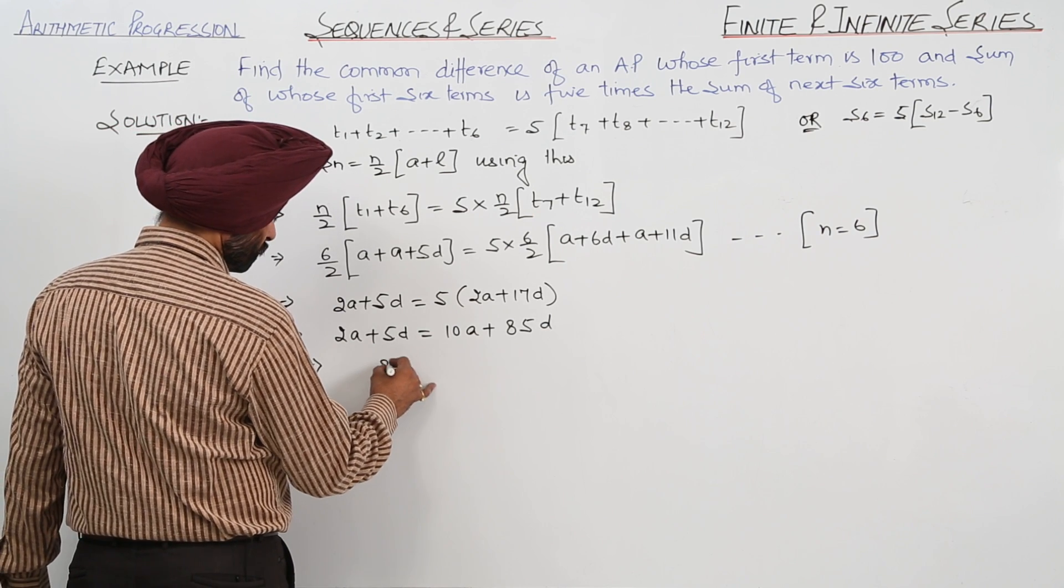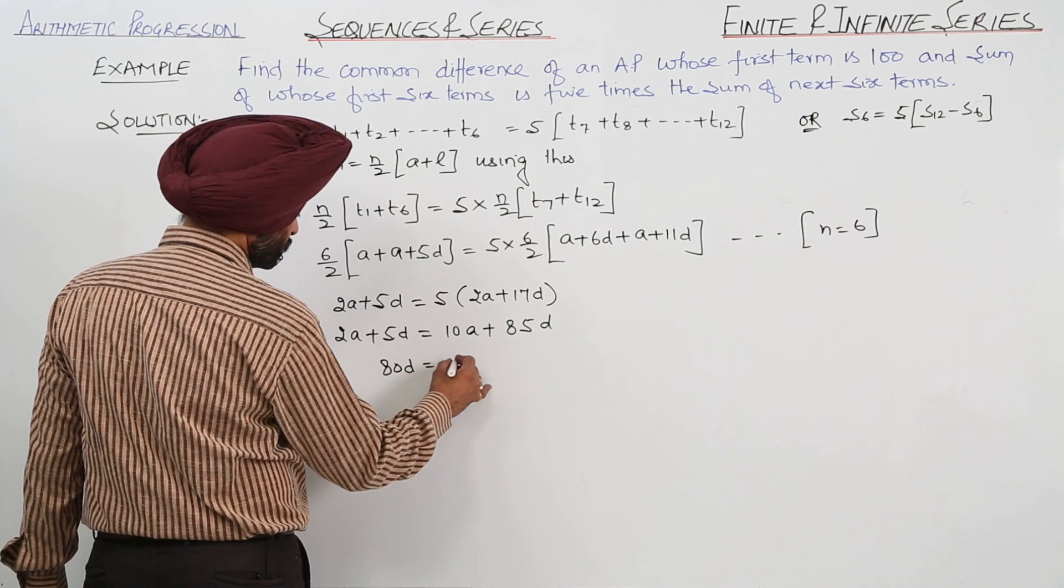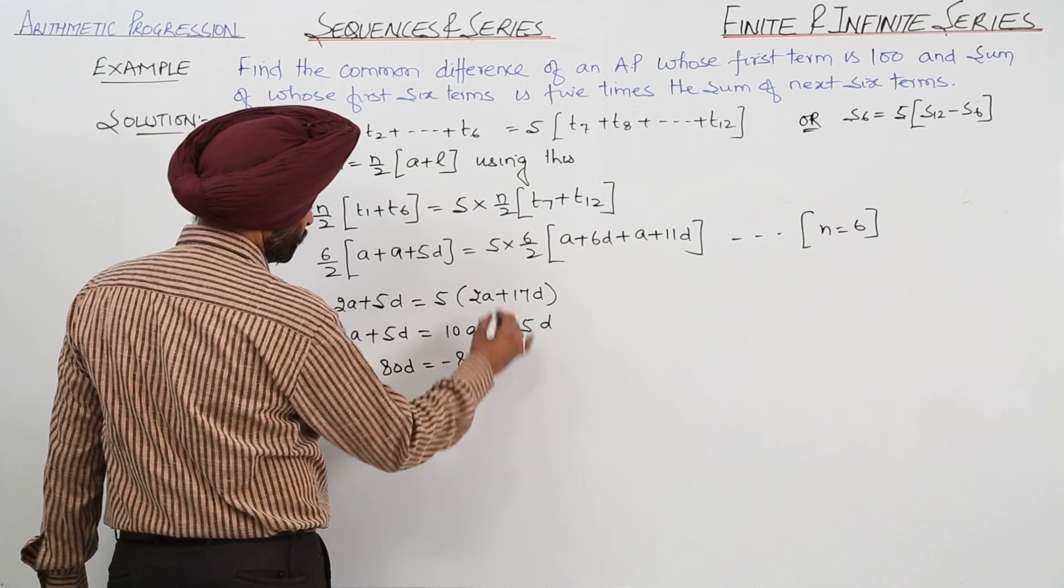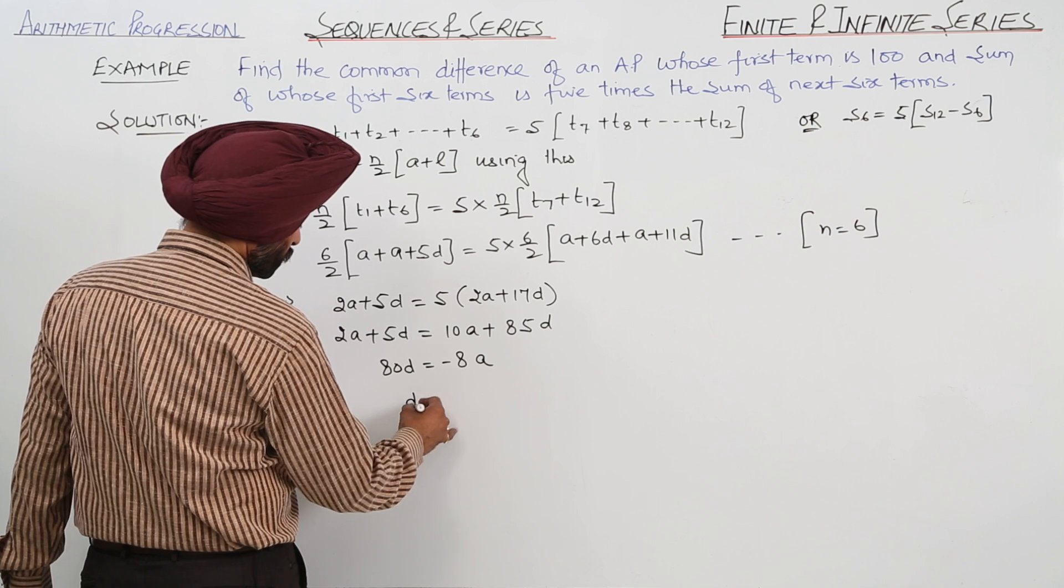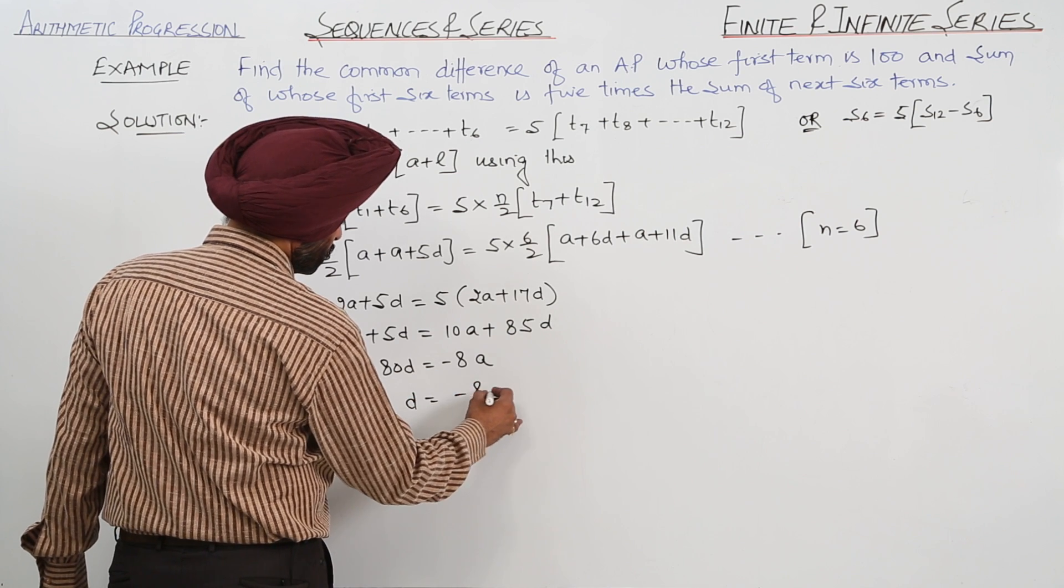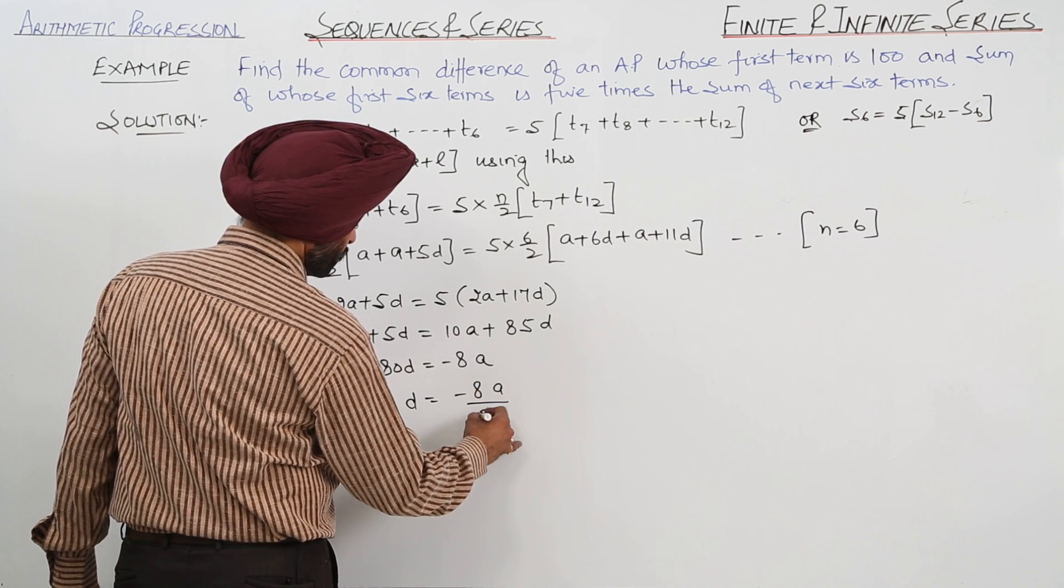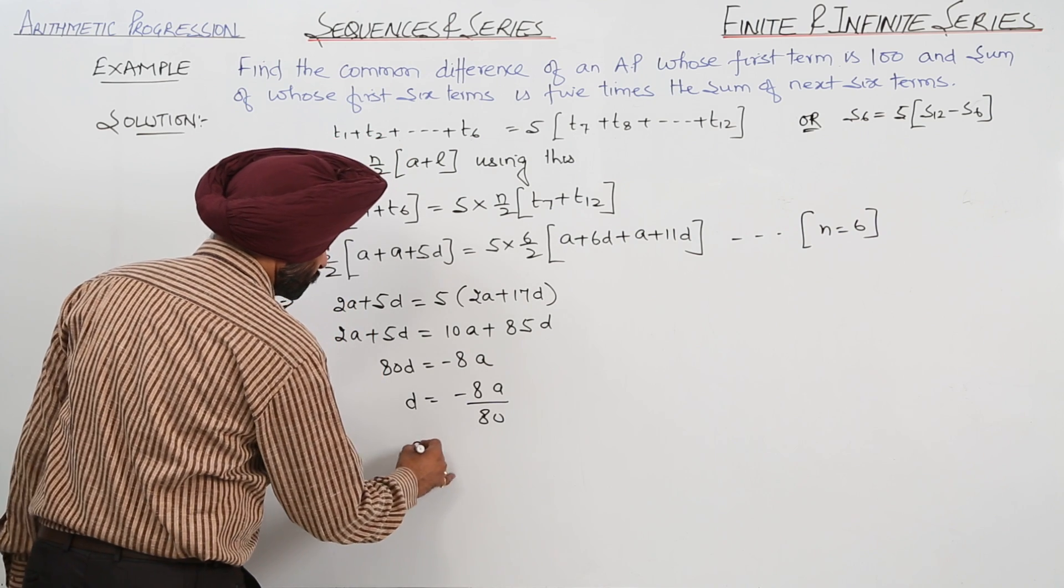Now, 80D is equal to negative of 8 times A. And what is D? D is negative 8A upon 80.